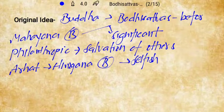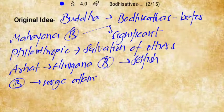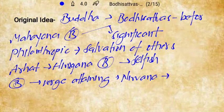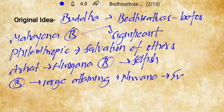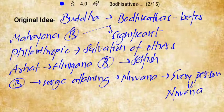A Bodhisattva is a person who is at the verge of attainment of Nirvana but would not enter it unless and until every person on this earth attained the status of Nirvana. Bodhisattvas postpone their own Nirvana for that reason, which is why they are known as philanthropic beings.